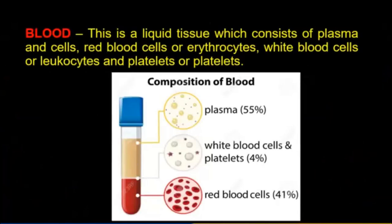Blood is a liquid tissue which consists of plasma and cells: red blood cells, or erythrocytes, and white blood cells, or leucocytes, and platelets.